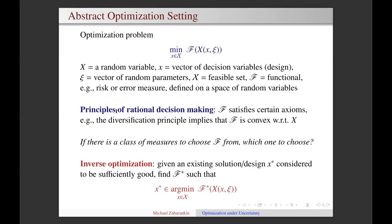However, if there is a whole class of functionals that satisfies given axioms, which one do we want to choose then? One possible answer is to use inverse optimization, which works as follows.